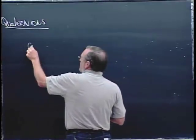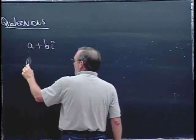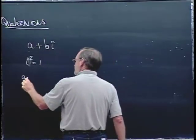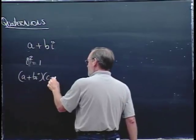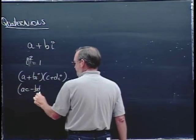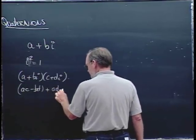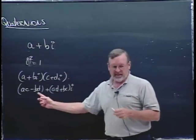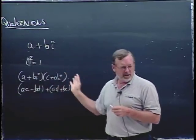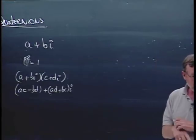Complex numbers look like A plus B·i, where i² equals −1. If you multiply two of these together you get AC − BD for the real part and AD + BC times i for the imaginary part — you get the −BD because B times D gives you an i², which pops out. You can multiply, add, and do everything with complex numbers.